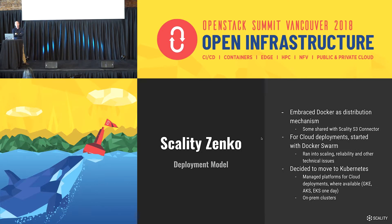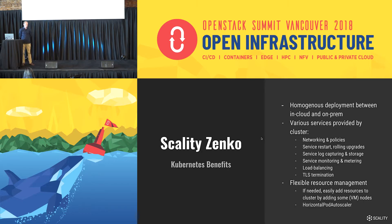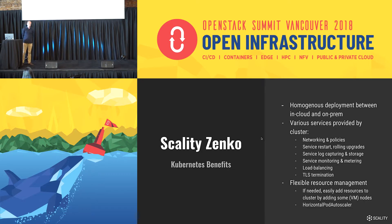But we still require on-prem clusters as well, to be able to deploy the solution at the customer data center. The benefits of using Kubernetes include homogeneous deployment between cloud and on-prem, and the various services a cluster provides that we don't have with Scality Ring or S3 connector from scratch — like networking and networking policies, management of service restarts and rolling upgrades, log management, metering, monitoring, load balancing, TLS termination — anything you can expect in a cloud environment.